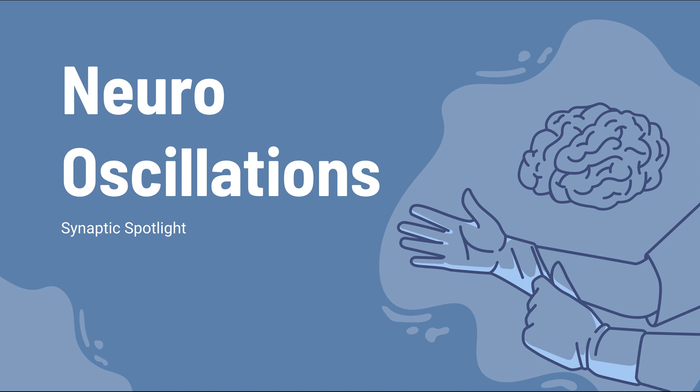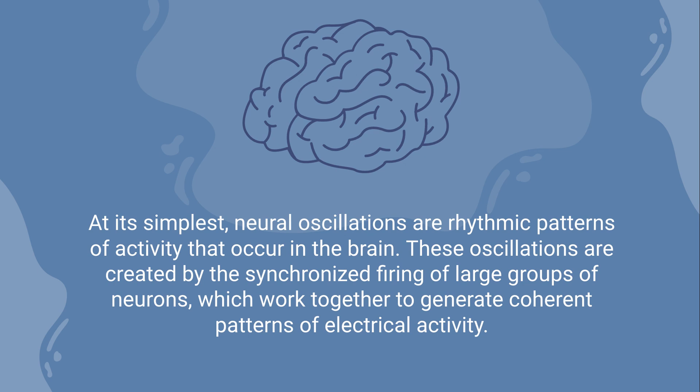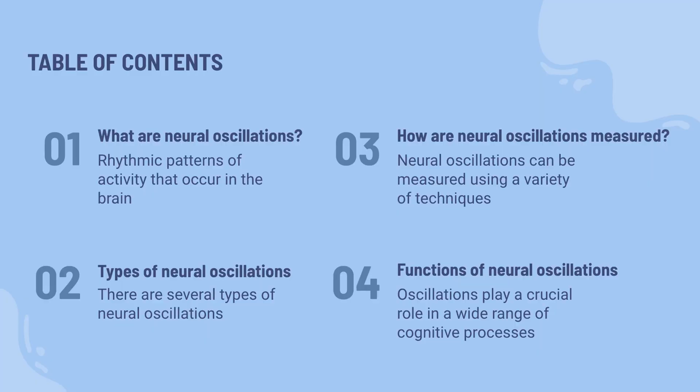But in today's video, we're going to be talking about a fascinating topic in neuroscience called neurooscillations. So what are neurooscillations? At its simplest, neurooscillations are a rhythmic pattern of activity that occurs in the brain. These oscillations are created by the synchronized firing of large groups of neurons, which work together to generate coherent patterns of electrical activity.